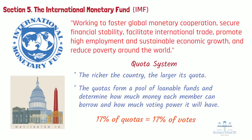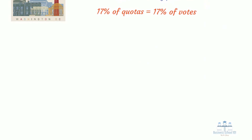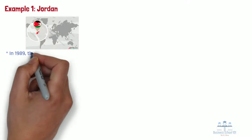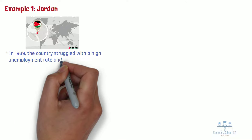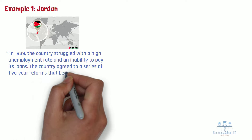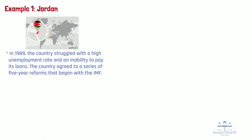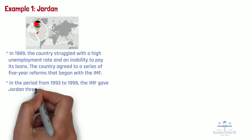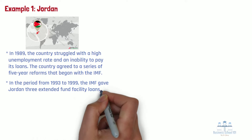The IMF has had many successes and failures over its history. Here are two examples. First, Jordan. Jordan had been impacted by its wars with Israel, civil war, and a major economic recession. In 1989, the country struggled with a high unemployment rate and an inability to pay its loans. The country agreed to a series of five-year reforms that began with the IMF. The Gulf War and a return of 230,000 Jordanians because of Iraq's invasion of Kuwait put a strain on the government as unemployment continued to increase. In the period from 1993 to 1999, the IMF gave Jordan three extended fund facility loans.